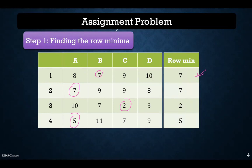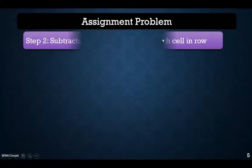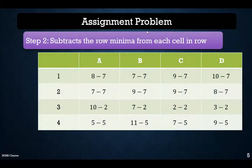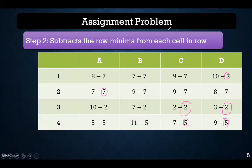Next, we subtract the row minima from each cell in the respective row. For row one, the minimum value is 7, so we subtract 7 from each cell. For row two, the minimum is 7; for row three, the minimum is 2; and for row four, the minimum is 5. We subtract the row minimum from each cell. This completes the very first step of the Hungarian method.